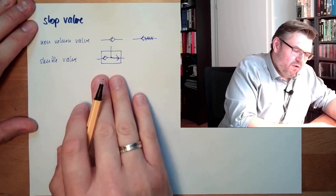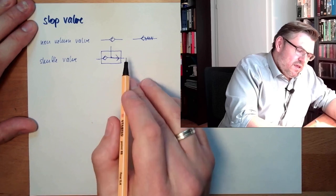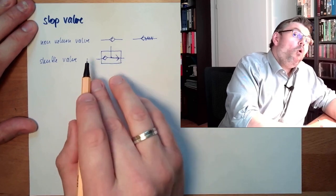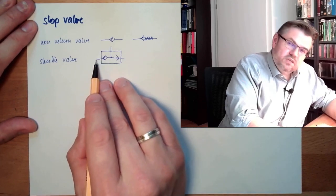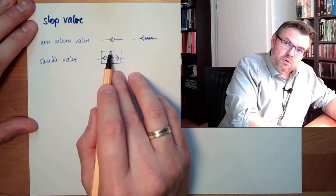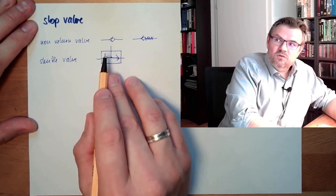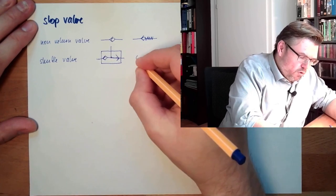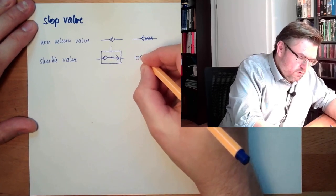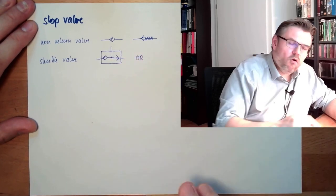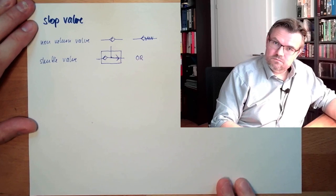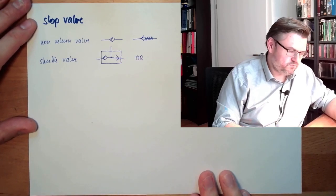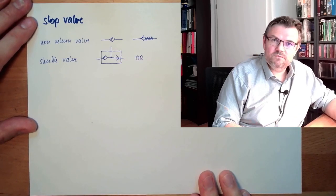So this shuttle valve: if either one input or the other has pressure, the output will also have pressure. This mainly is an OR — a logical OR — combination of two pressure lines. Shuttle valve.